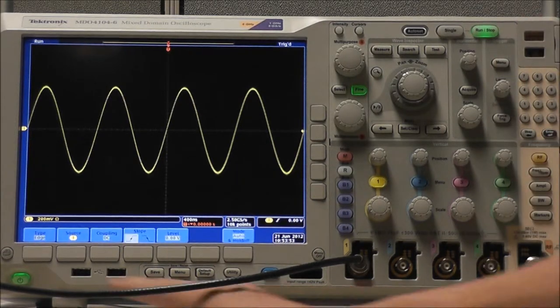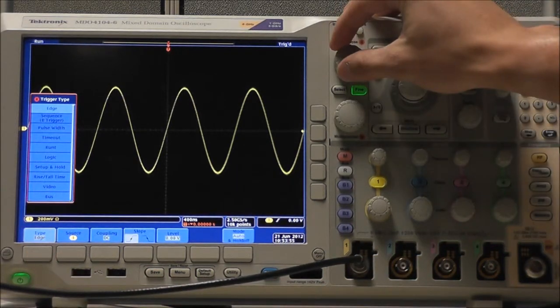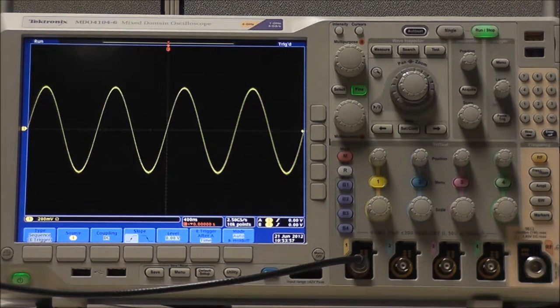If we go into our trigger menu, select Trigger Type, then we can select Sequence B Trigger. Sequence allows us to combine an Edge A event, Main Trigger, with an Edge B event, Delayed Trigger to capture more complex signals.